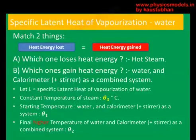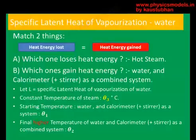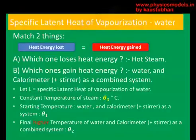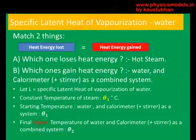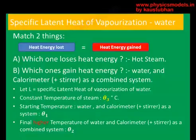Now we equate both sides. The heat energy lost by steam must simply match the heat energy gained by water and the calorimeter as a system. Let's use some common symbols: L is the latent heat of vaporization of water. Let the temperature of steam be θ3, the starting temperature of water and calorimeter as a system be θ1, and after the steam condenses into the calorimeter and water, they will get warmer — let that final temperature be θ2.